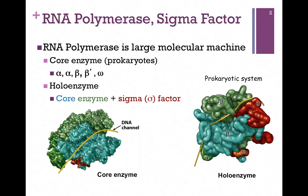It's the core enzyme that's actually the catalytic portion of the enzyme that synthesizes RNA. However, in order to initiate transcription, another protein is required, and that's called the sigma factor. The core enzyme complexed with the sigma factor is referred to as the holo enzyme — the whole enzyme — and the sigma factor is required to initiate transcription. The holo enzyme is pictured on the right, and you can see the sigma factor here in reddish brown.